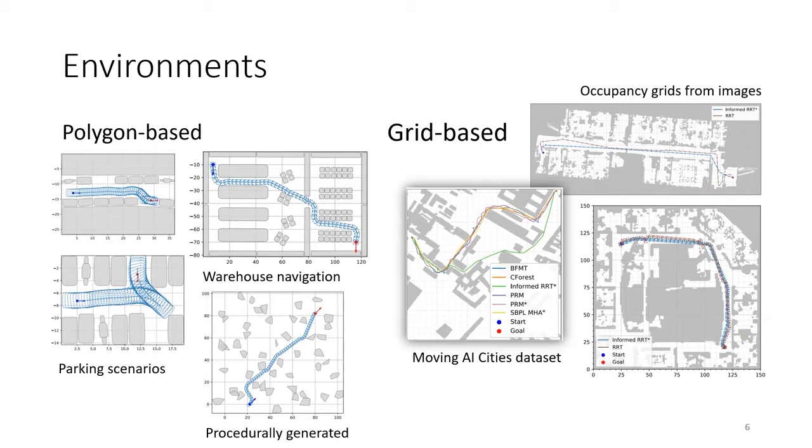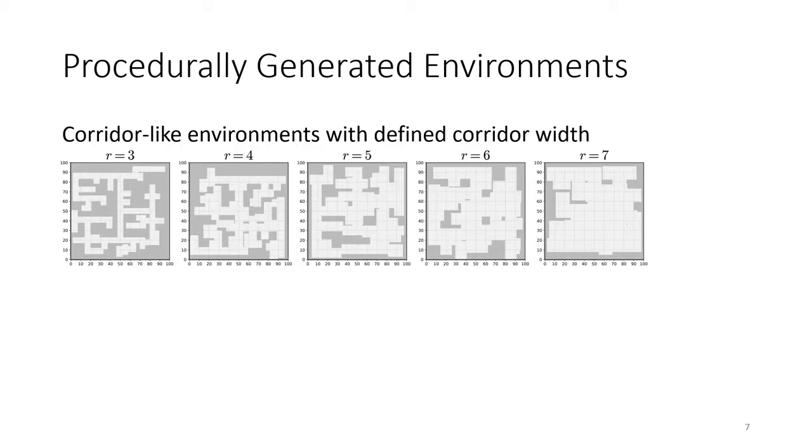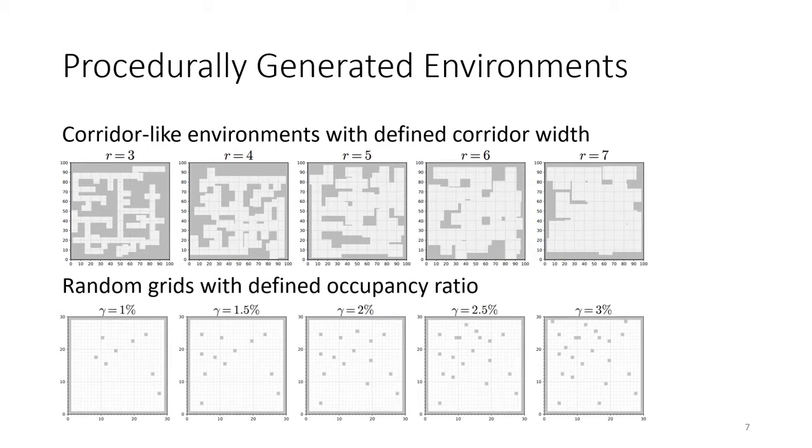Occupancy grids resembling corridor-like environments can be randomly generated for different corridor sizes and complexities. Furthermore, random grids can be generated with a defined occupancy ratio. For polygon-based environments, BenchMR supplies a generator for asteroid fields, where convex polygons can be automatically generated at random to represent obstacles.